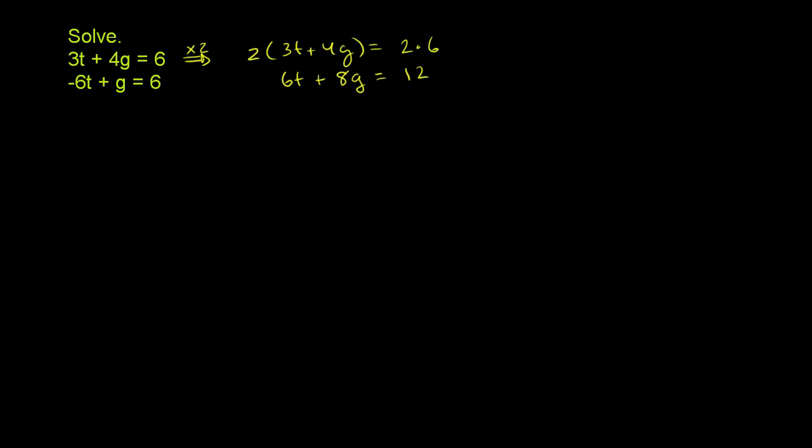Now, let me write the second equation right below, and I'll write it in orange. So the second equation right here is negative 6t plus g is equal to 6.